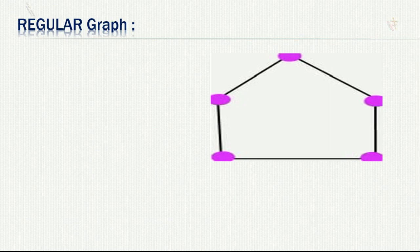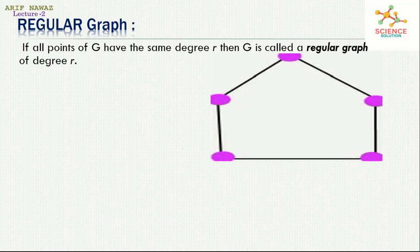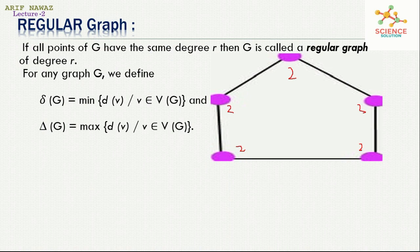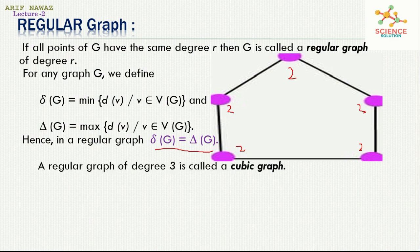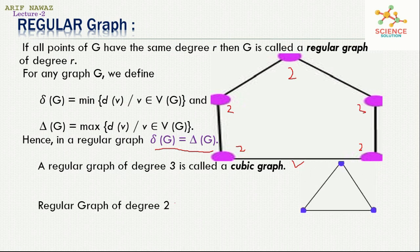Regular graph: if all the vertices of G have the same degree R, then G is called a regular graph of degree R. If δ is the minimum degree and Δ is the maximum degree of vertices in G, then in a regular graph δ(G) equals Δ(G) — meaning all vertices have the same degree. A regular graph of degree 3 is called a cubic graph. Regular graphs of degree 2 are also shown in the diagram, where every vertex has degree 2.